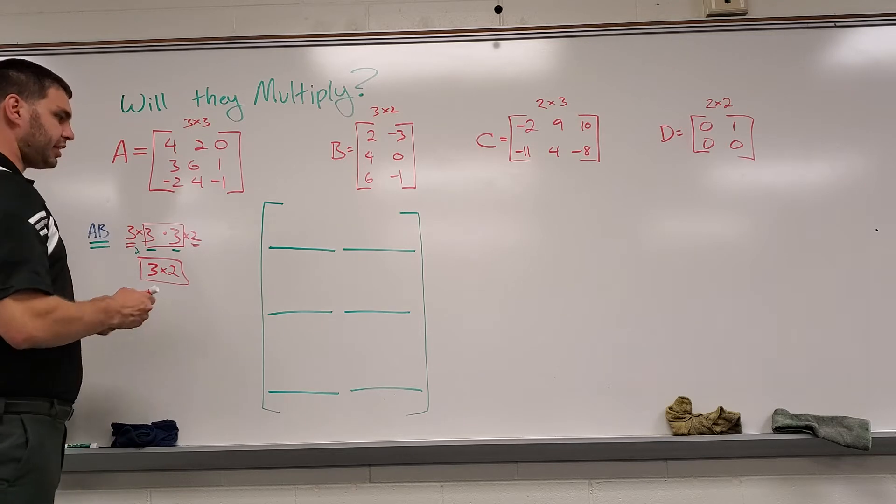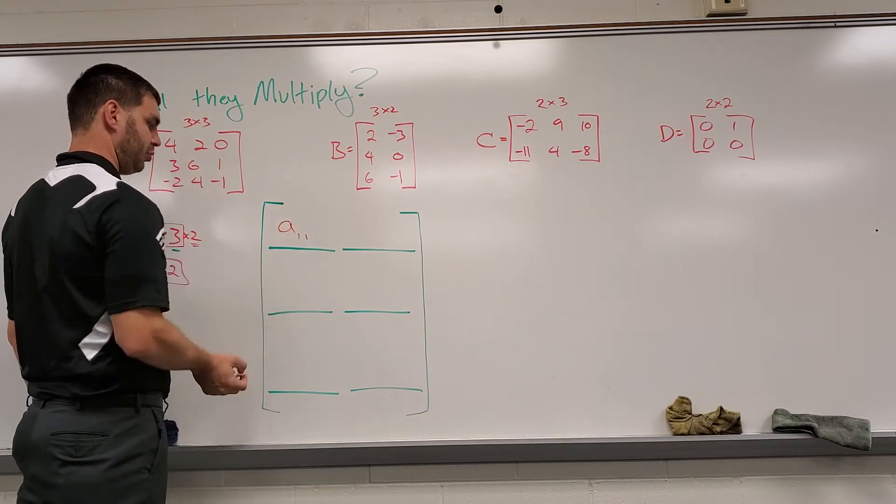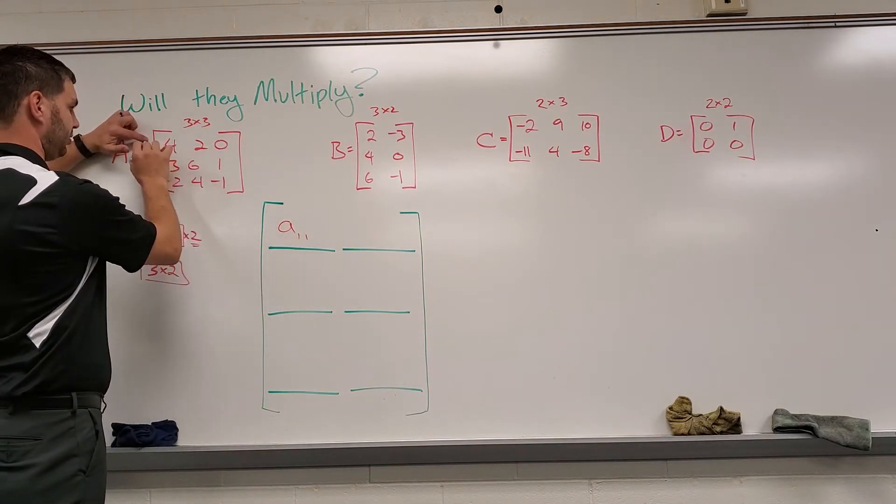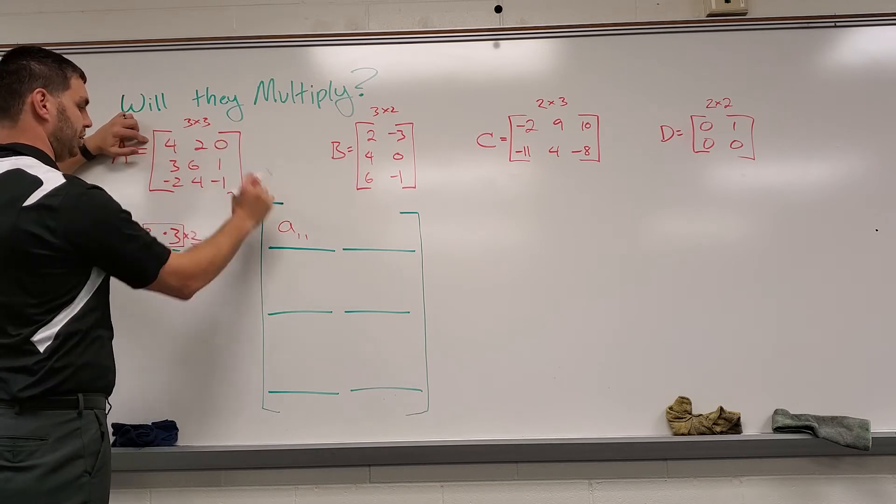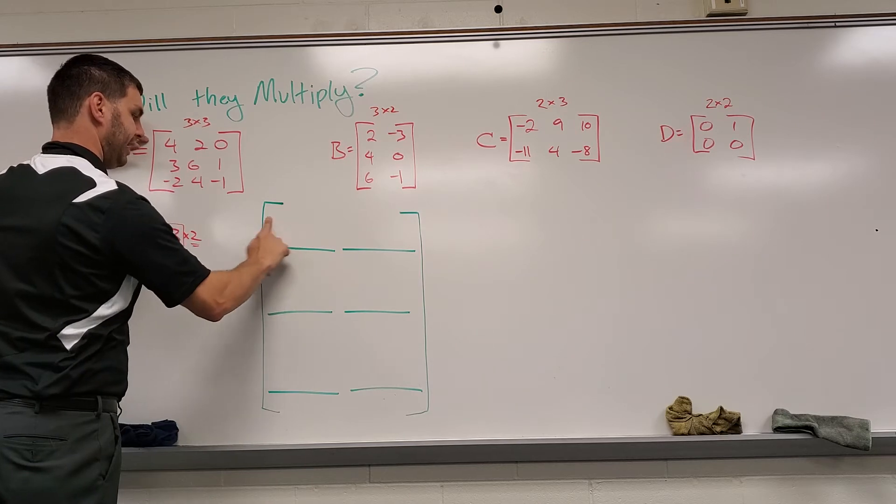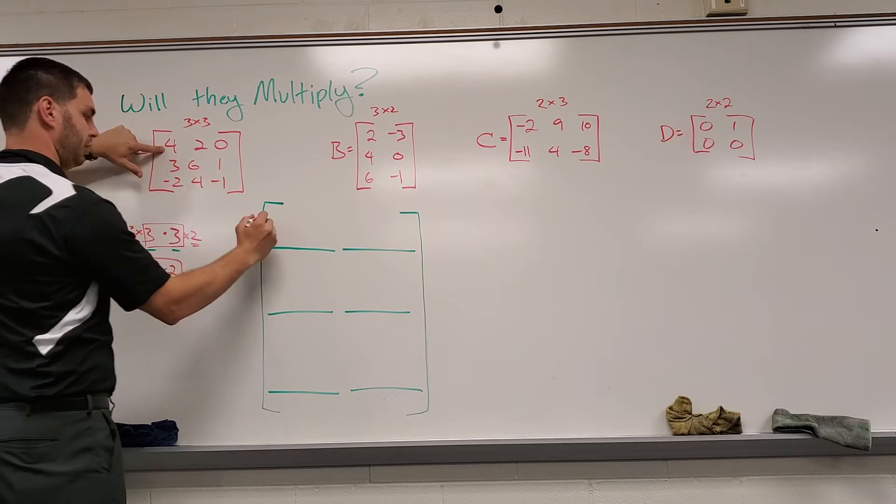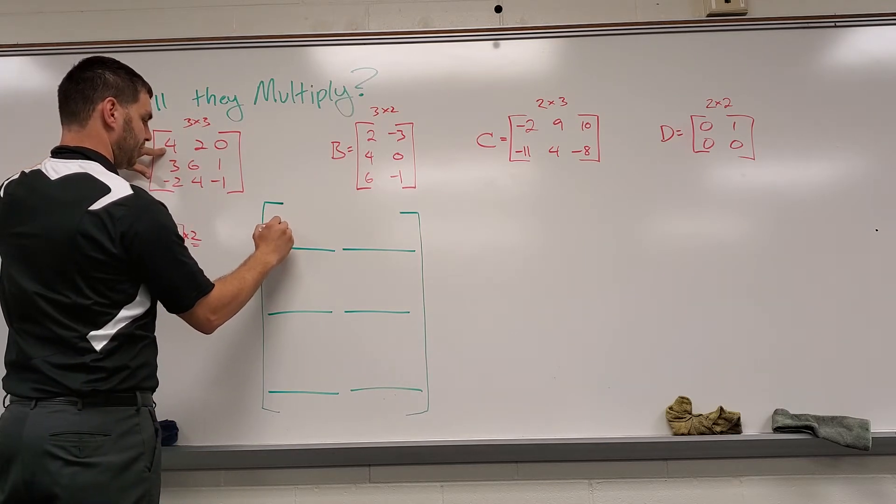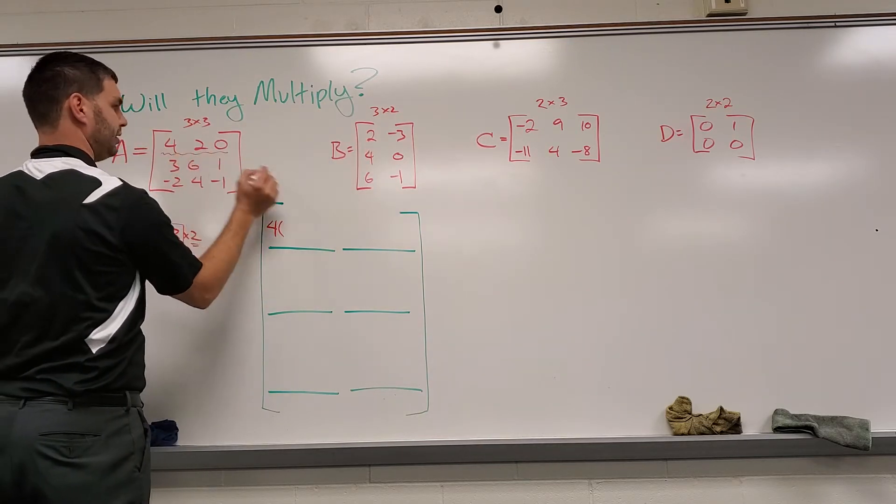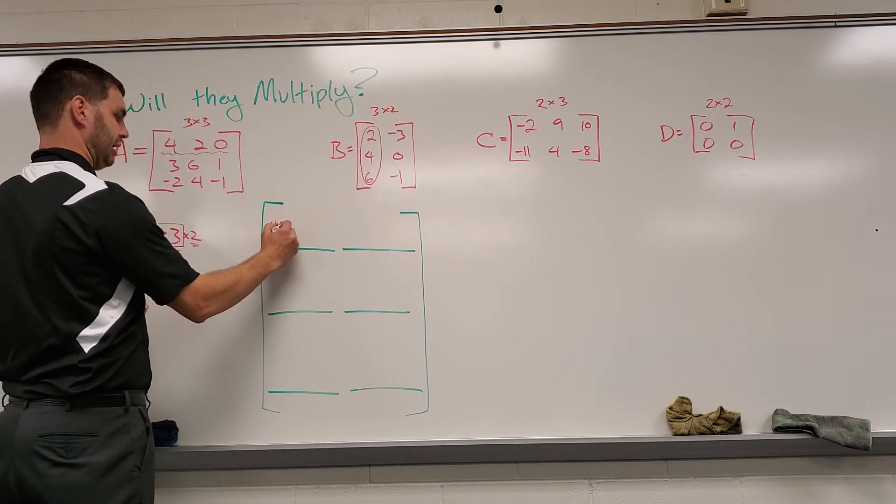And the way I do this is for this first part, remember this would be like A one one. It's going to be the first row in our first one times the first column in the second one. And when we do it, it's going to be like this. We're going to take this first element, four, and we're going to multiply that times the first element over here, two. It's almost like we're taking this column times this row. So four times two.